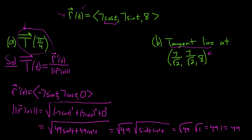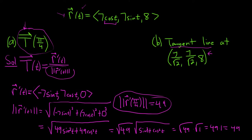So our magnitude is 7. Now let's plug in π/4 for the top piece. Both sin(π/4) and cos(π/4) equal √2/2, so r'(π/4) = ⟨-7·(√2/2), 7·(√2/2), 0⟩. The magnitude at π/4 is 7, which is the bottom piece.